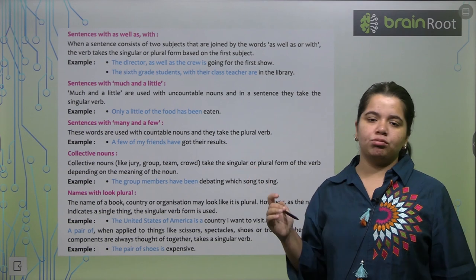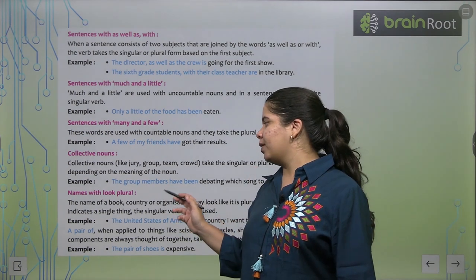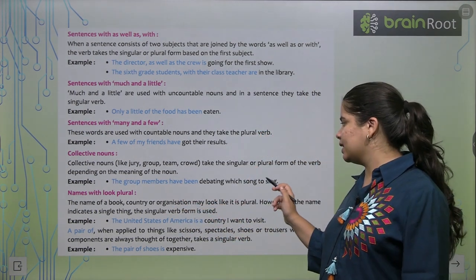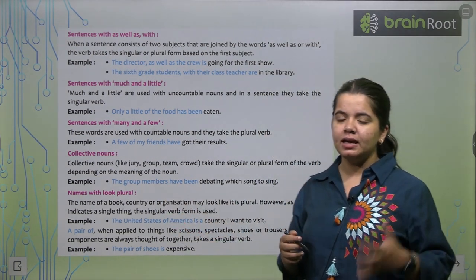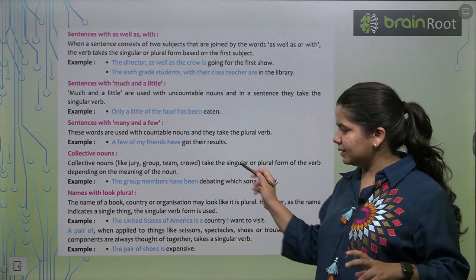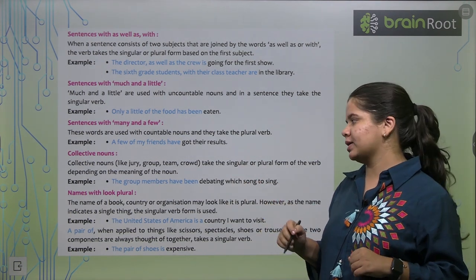Meaning kya hai noun ka? Jaise, the group of members have been debating which song to sing. So, the group members, they are debating ki, kon sa gaana gaana hai? So, aap dekh sakte hai, is tariqe se, humne verb ko use kiya hai.